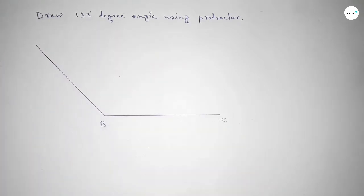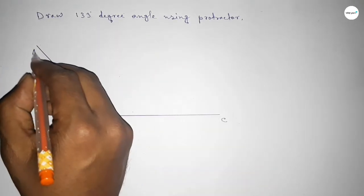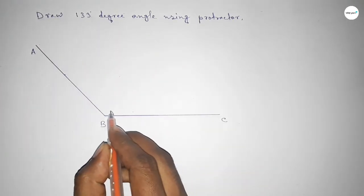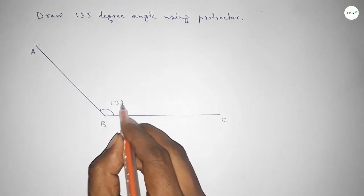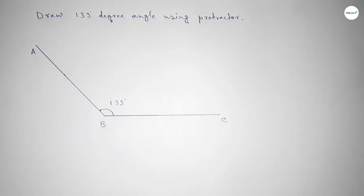So angle ABC up to this is 133 degree angle. Therefore, angle ABC equals 133 degree angle. That's all. Thanks for watching. If this video is helpful to you, that's it.